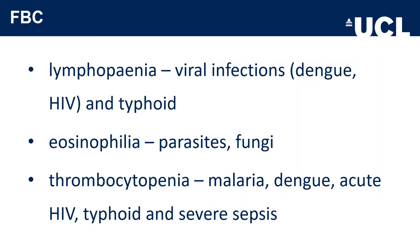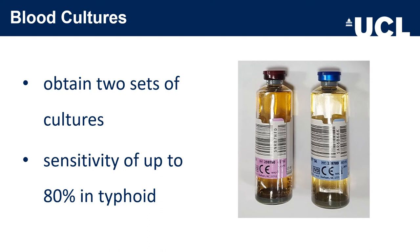A full blood count can be very useful. Examine for lymphopenia, which is particularly common in viral infections such as dengue, HIV and typhoid. A raised eosinophil level can be seen in parasitic and fungal infections. Thrombocytopenia can be seen in malaria, dengue, acute HIV, typhoid and severe sepsis. Lymphopenia is also one of the biochemical markers of COVID-19 infection. Obtain two sets of blood cultures — this is particularly important if you are concerned about typhoid, as blood culture has a sensitivity of up to 80% in typhoid disease.